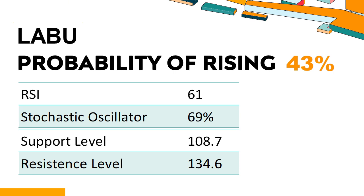What are the key technical signals for LABU performance? Technical Signals and Analysis: LABU's 14-Day RSI value was 61. When the RSI is between 50 and 70, it generally indicates that the stock is moderately bullish, meaning the price has been rising but has not yet reached overbought levels (RSI of 75 or higher). The current stochastic oscillator of LABU is 69%. When the stochastic oscillator stays between 50 and 80, it may indicate a mild downtrend with some selling pressure, and an oversold signal could indicate a potential buying opportunity.